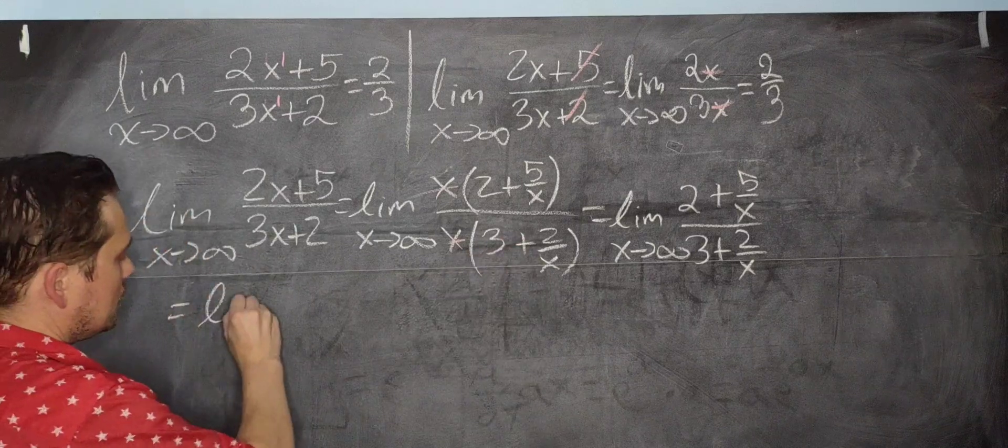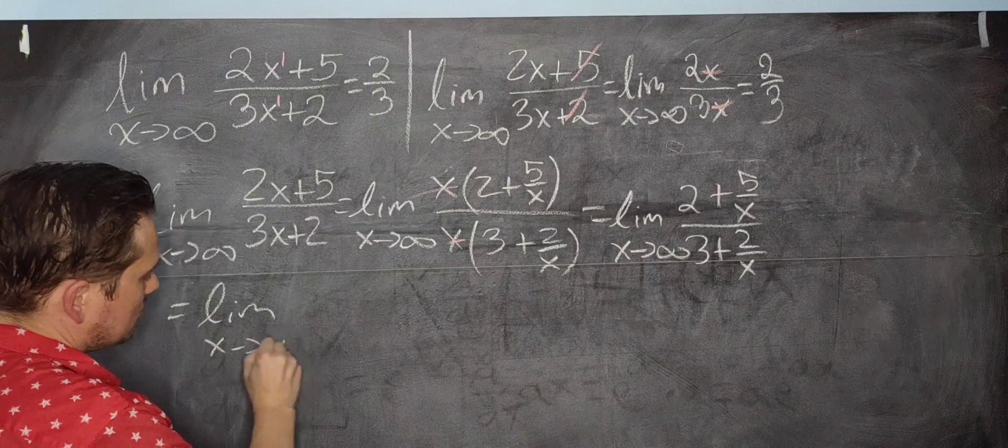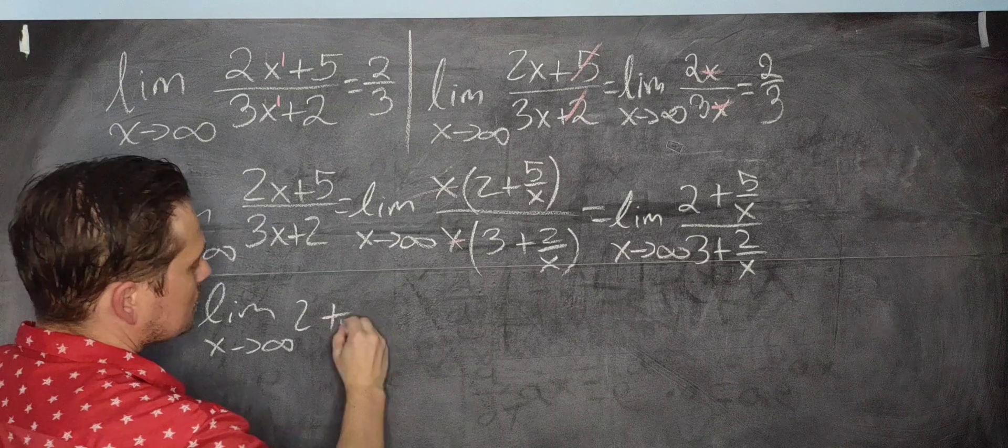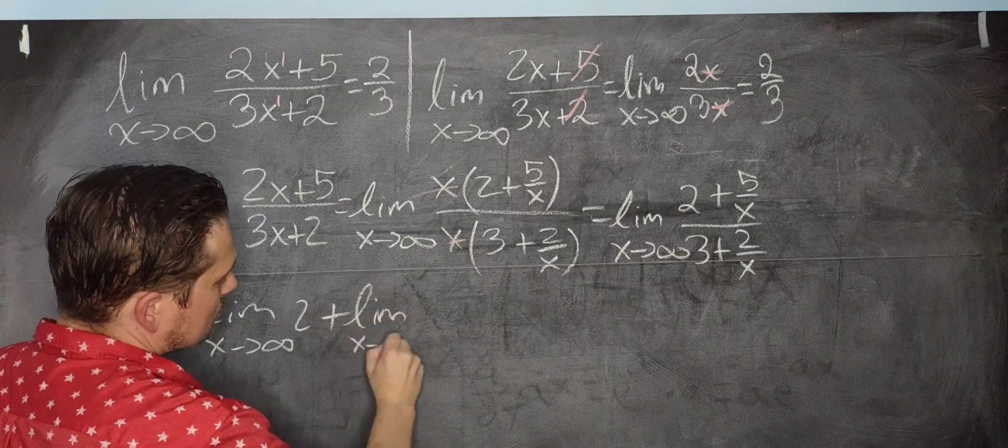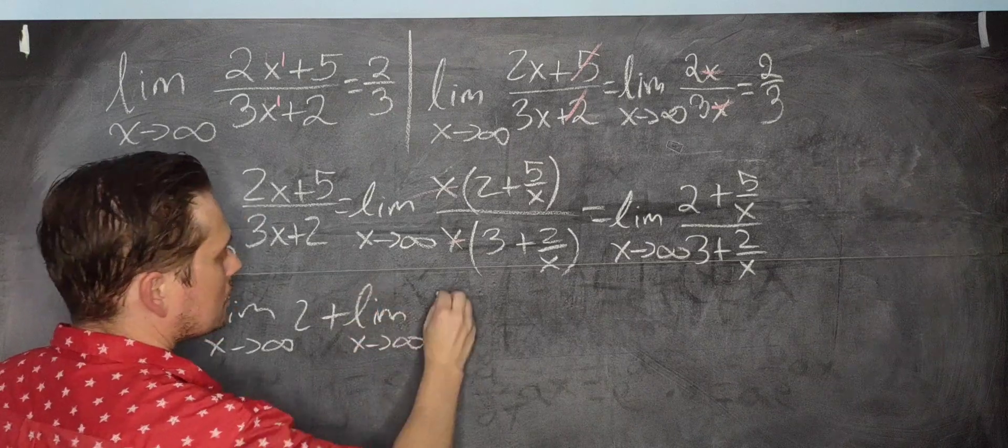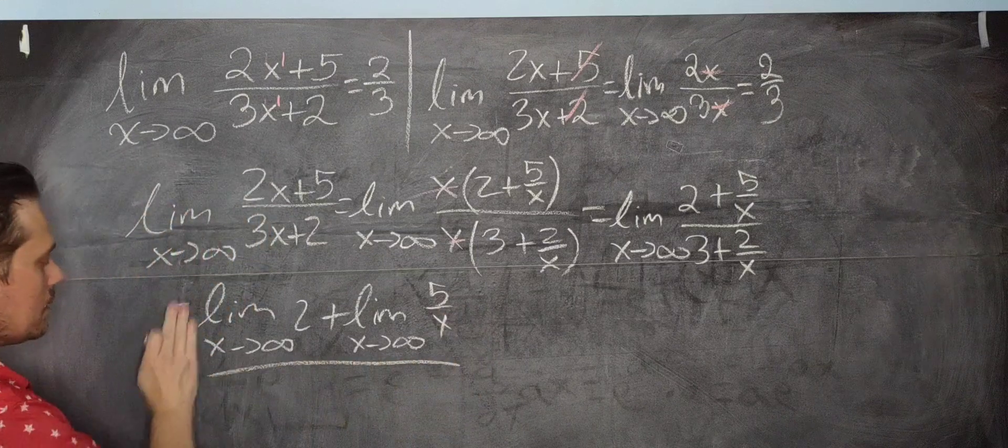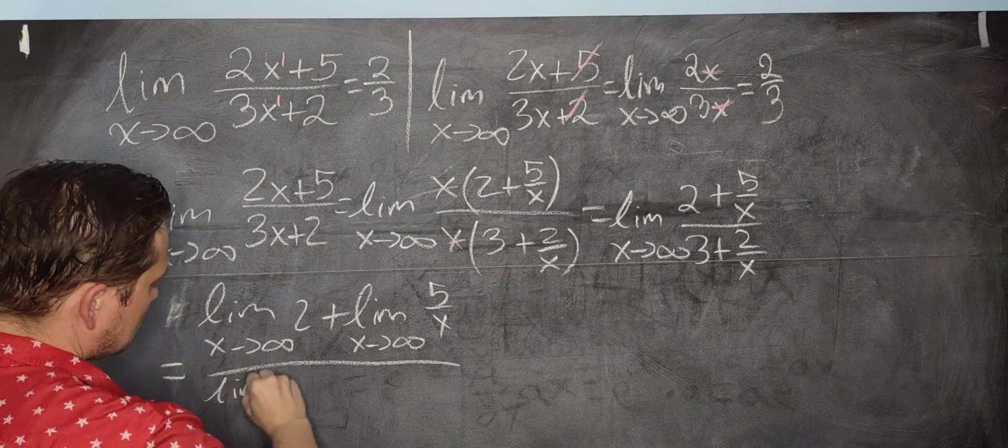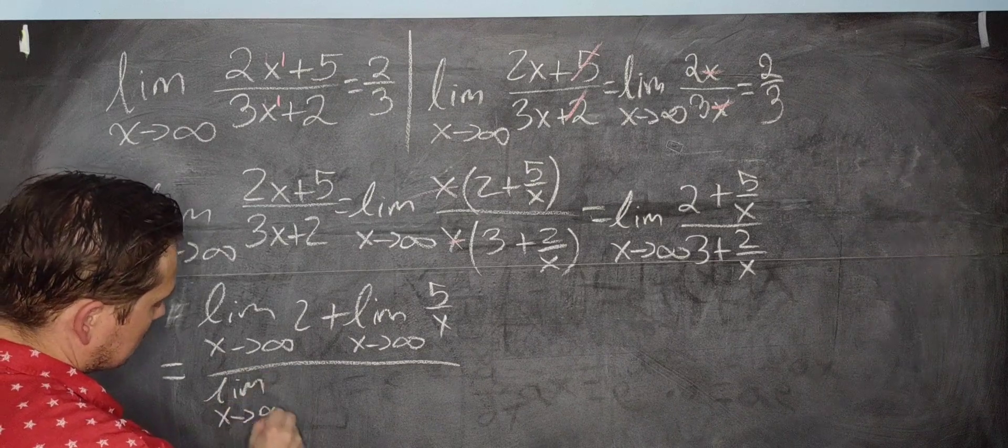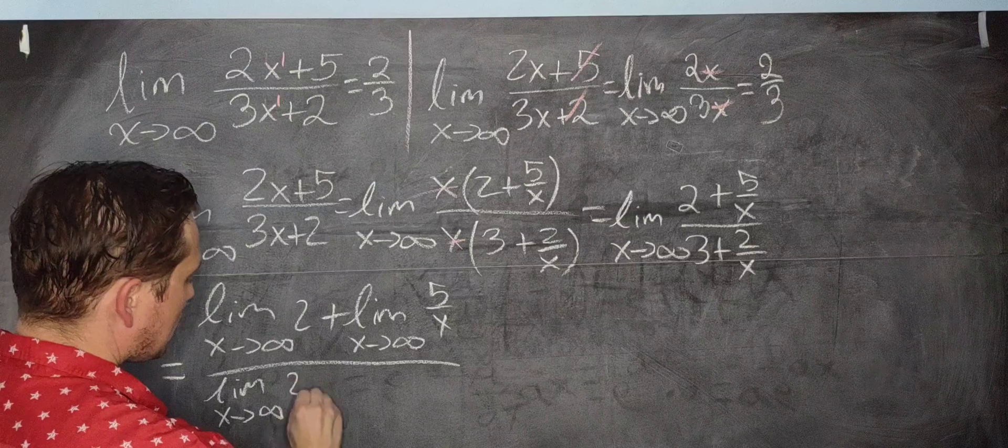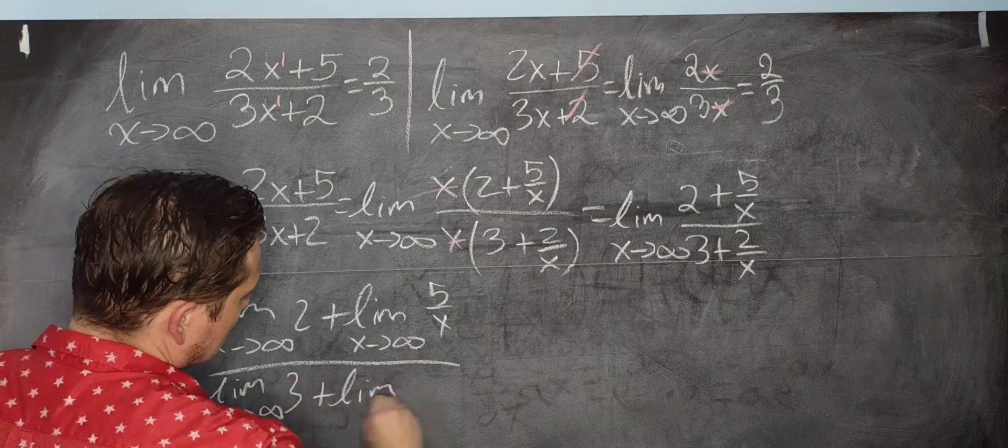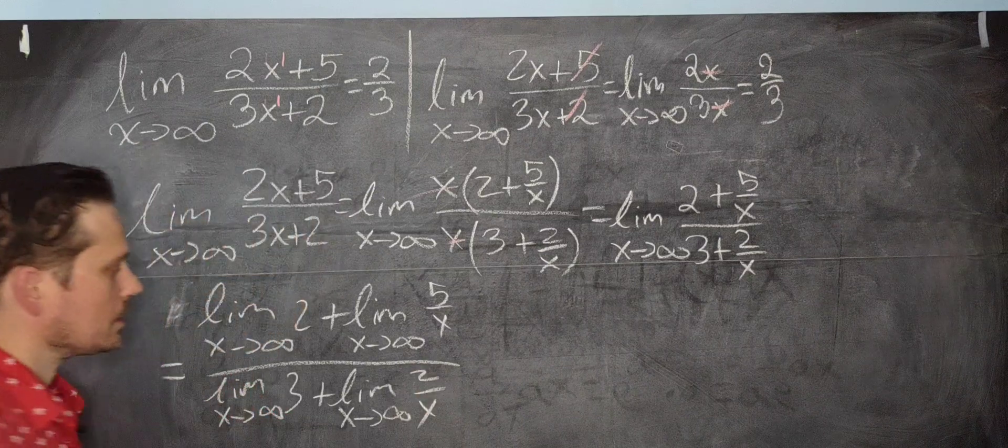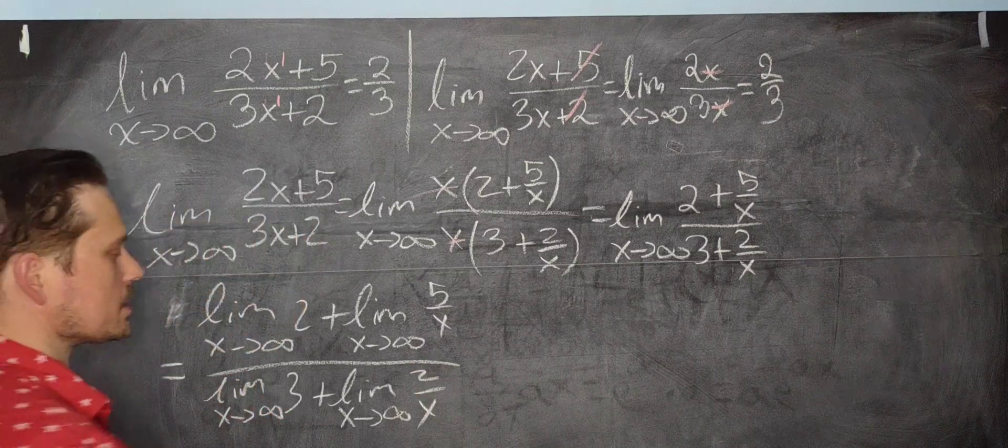So you're going to have the limit as x approaches positive infinity of the 2 plus the limit as x approaches positive infinity of the 5 over the x. And then the bottom, you're going to have the limit as x approaches positive infinity of the 3 plus the limit as x approaches positive infinity of 2 over x, this way. And now you can apply each limit operation individually.